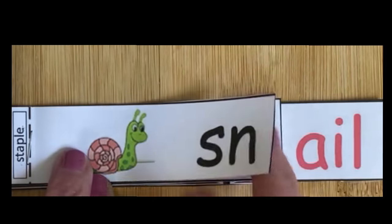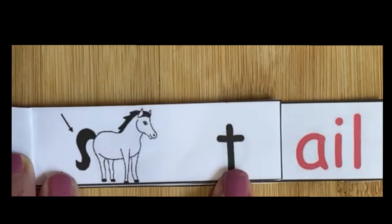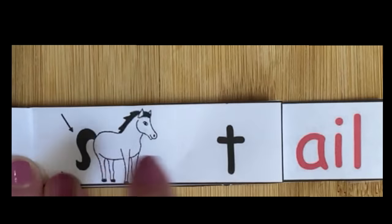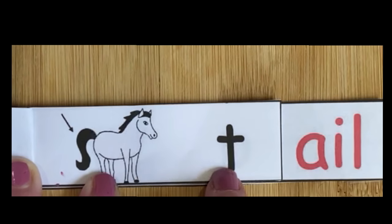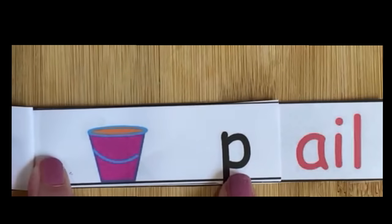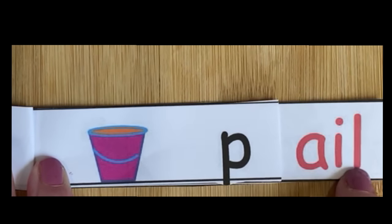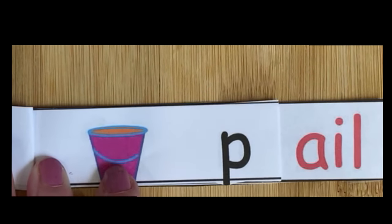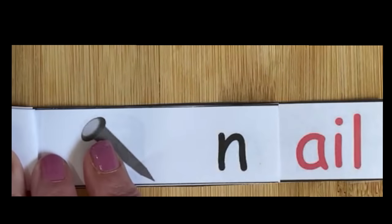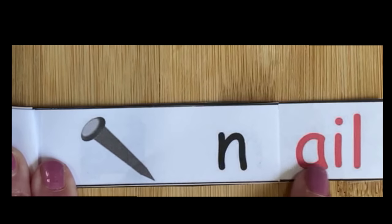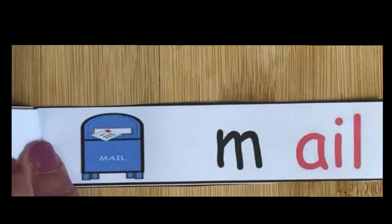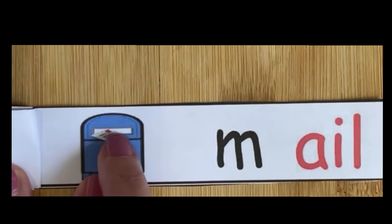When we change the onset — in this case S-N to make 'snail' — we go to the next letter, T, with picture support pointing to 'tail.' T plus 'ale' makes 'tail.' Now we change the onset T to P, which makes P plus 'ale' — 'pale.' Then N plus 'ale' is 'nail.' And our last one changes to the letter M, making 'male,' and we see something going in the box.